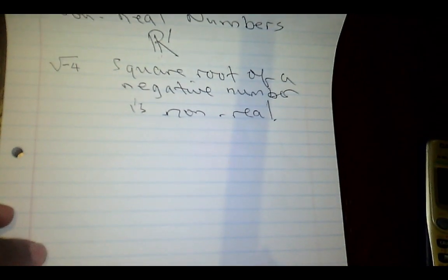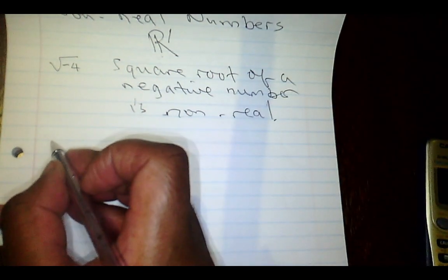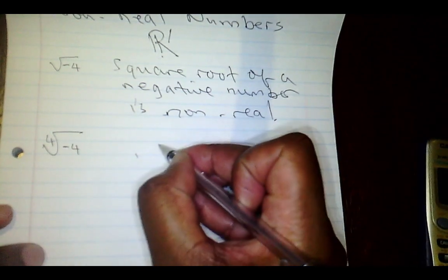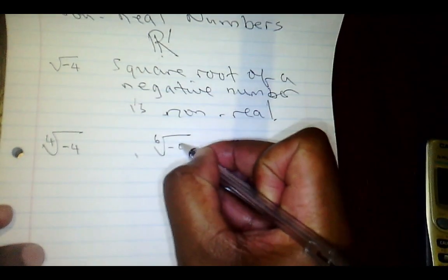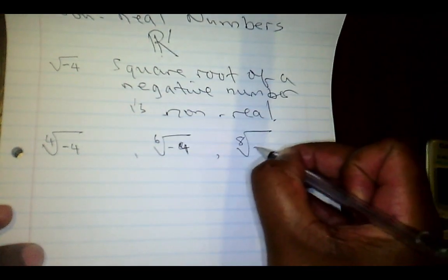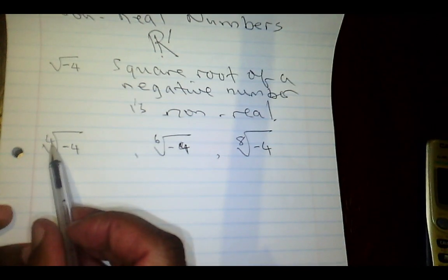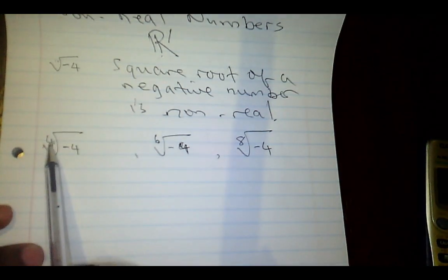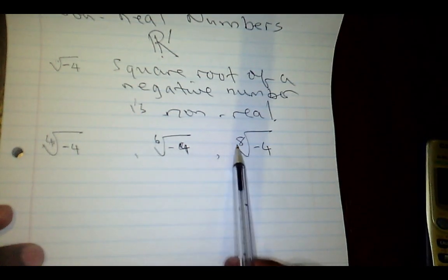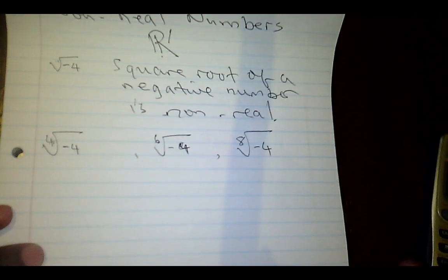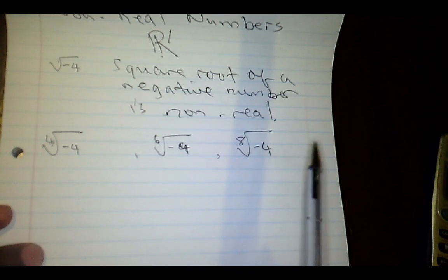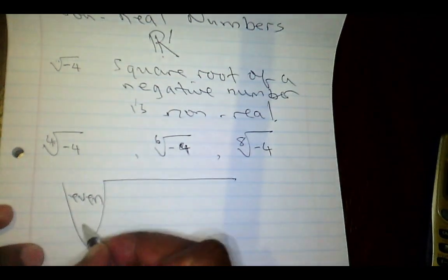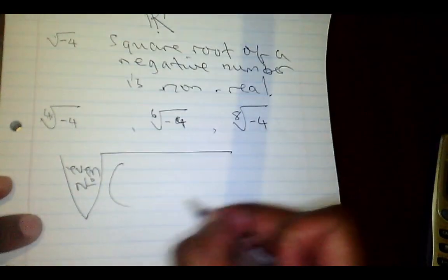It's not only square roots. Try using your calculator to find the fourth root of negative 4, the sixth root of negative 4, and the eighth root of negative 4. Notice I'm picking even roots — the square root has an implied 2, the fourth root, the sixth root, the eighth root. You'll find that all these are non-real. In short, a non-real number is one where the root index is even and the number inside is negative.